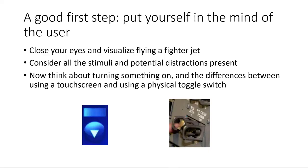So how do you avoid falling into this trap? A good first step is to put yourself into the mind of the user while they are doing their job. Visualize flying a fighter jet — consider all the things you have to keep track of. With a physical switch, with training you don't have to look at the toggle switch; you can feel when you have changed it. But a touch screen requires you to look at the screen to locate it among the other controls, and it offers no tactile feedback — without looking you don't even know if you are turning it on or off.